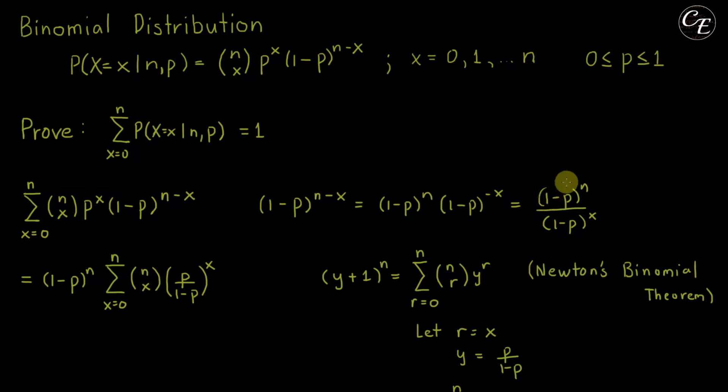Now this 1 minus p raised to n is a constant, so we can move it out from the summation like this one. Then we're left with summation of n chooses x.